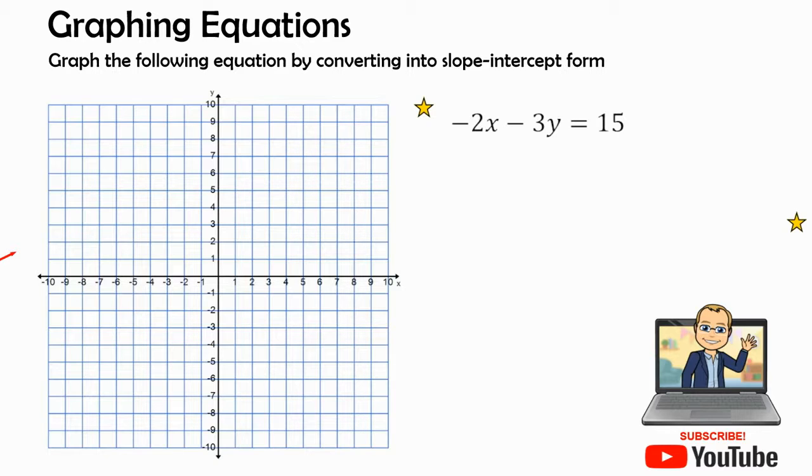Our first equation, we notice that it is in standard form. It's negative 2x minus 3y equals 15. So our idea is to get it into slope-intercept form.